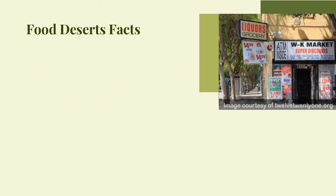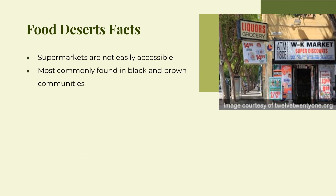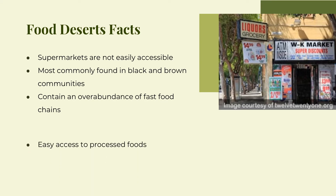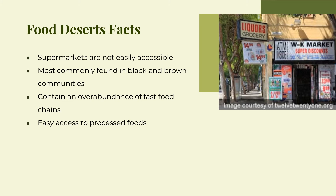Here are some key facts about food deserts. In suburban and rural areas, public transportation is either very limited or unavailable, with supermarkets often many miles away from people's homes. Food deserts are most commonly found in Black and brown communities. People's choices about what to eat are severely limited by the options available to them and what they can afford, and many food deserts contain an overabundance of fast food chains selling cheap meat and dairy-based products that are high in fat, sugar, and salt. Processed foods, typically sold by corner delis, convenience stores, and liquor stores, are usually just as unhealthy.